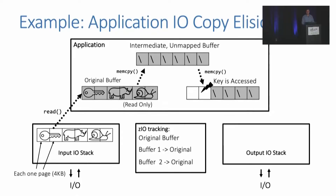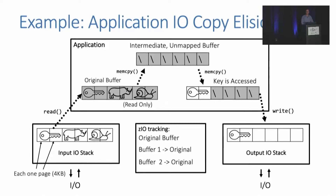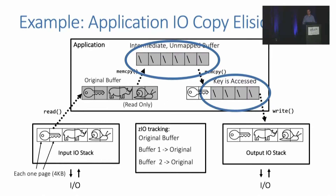If, for example, the key in our key-value pair is accessed, that will trigger a page fault, and we can use the data from the original buffer to fill the page fault and allow it to be accessed. If this data is eventually written to an output I/O stack, we copy data that has been filled by page faults and fill the rest of the write buffer using the original buffer we read from the input I/O stack. In this example, we've effectively eliminated the need to copy ten pages of data.